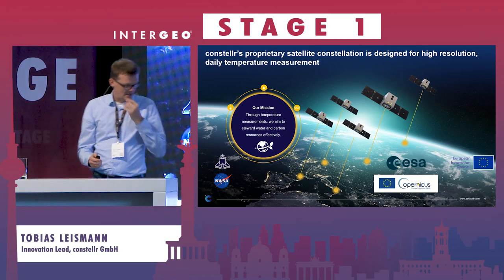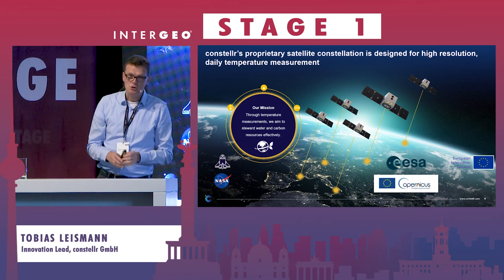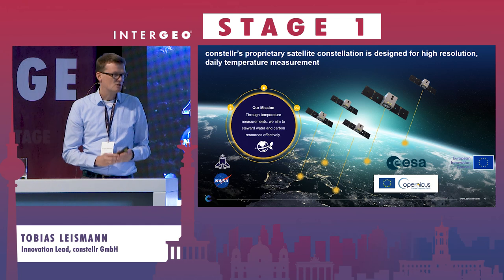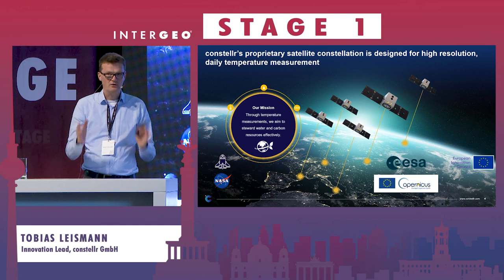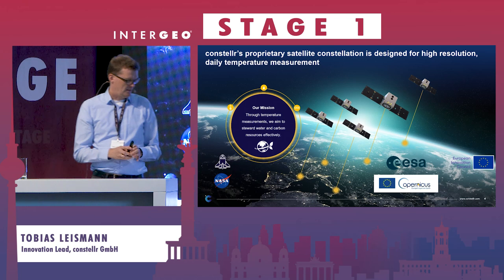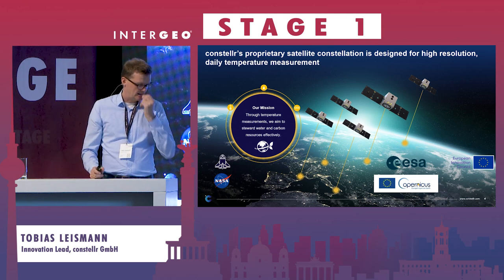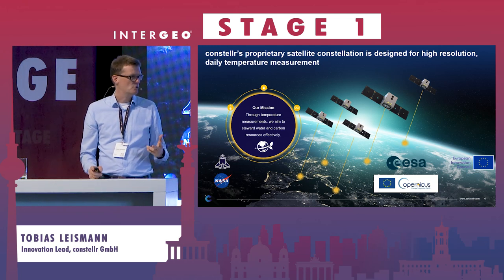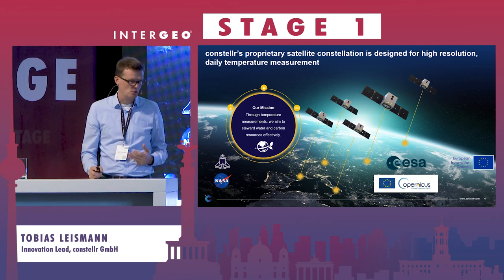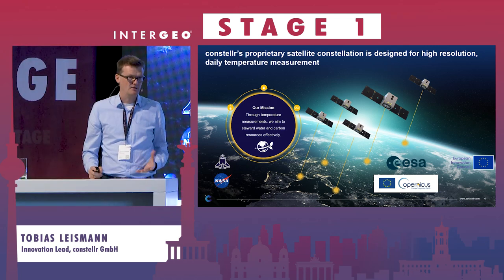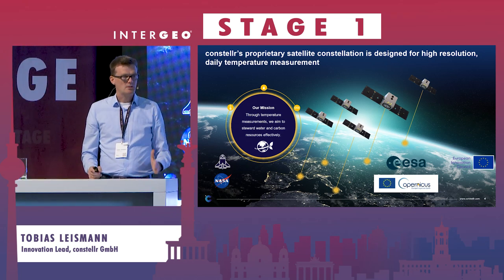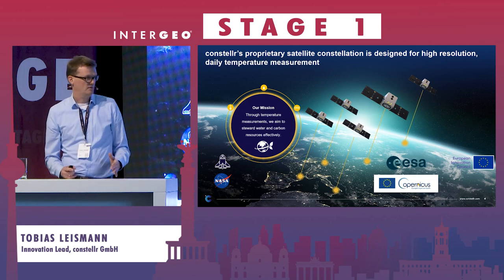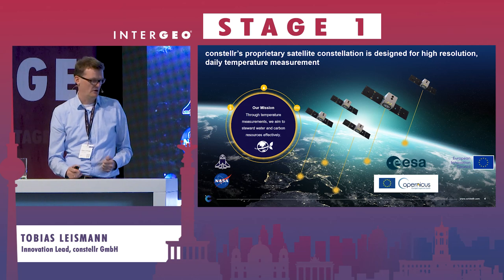At Constella, we are actually launching our own satellite constellation starting next year to measure temperature in a 30 by 30 meter grid on Earth. We are supported by ESA, we are part of the Copernicus program, and we are supported by the German national government and the European Commission to bring the satellites up into the sky. Our mission is to measure temperature, water, and carbon all over the Earth, and especially the urban heat problem has come to our attention.